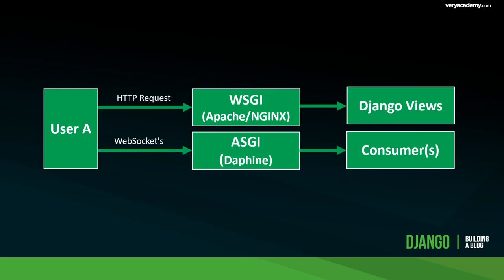Moving deeper into the setup for WebSockets: we're probably familiar with this workflow — HTTP requests from the user go through Django via WSGI, the web server gateway interface, which is a Python interface for handling requests. That routes to Django URLs and then to the view. In WebSockets, it's a similar workflow, which makes it easier if you're familiar with Django. User A sends a WebSocket request, but we need to handle it differently — we can't use WSGI anymore.